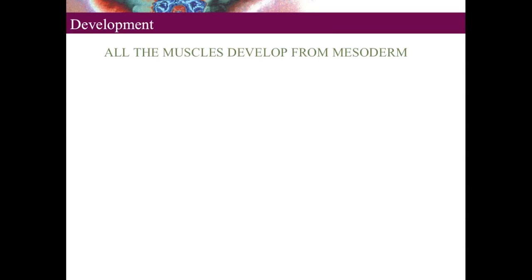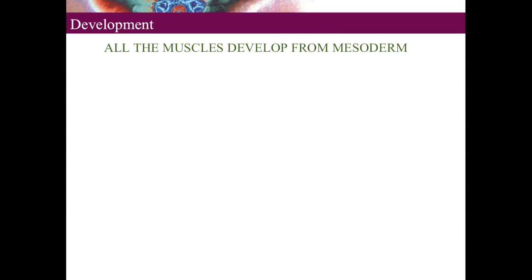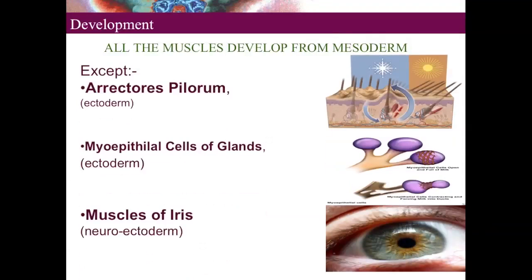Developmentally, all the muscles of the body develop from the mesoderm, with a few exceptions. The first exception is the arrector pili muscle, the muscle attached to the hair follicle, and the myoepithelial cells of glands — both develop from the ectoderm. The muscles of the iris develop from the neuroectoderm. Thus most muscles in the body develop from mesoderm.